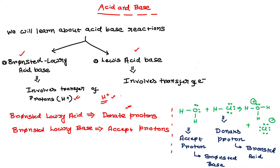Let's understand Bronsted-Lowry acid and base using a simple example. In this reaction, HCl — hydrochloric acid — is in contact with water molecules. The water molecule actually accepts a proton and becomes H₃O⁺, while HCl transfers its proton to the water molecule and becomes Cl⁻. From this we can identify the Bronsted-Lowry acid and base.